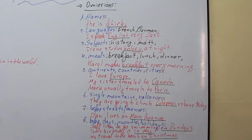The second part of this video is about omissions of this article. Number one, this article is omitted before names. For example, she is Shirley. Don't say she is the Shirley.